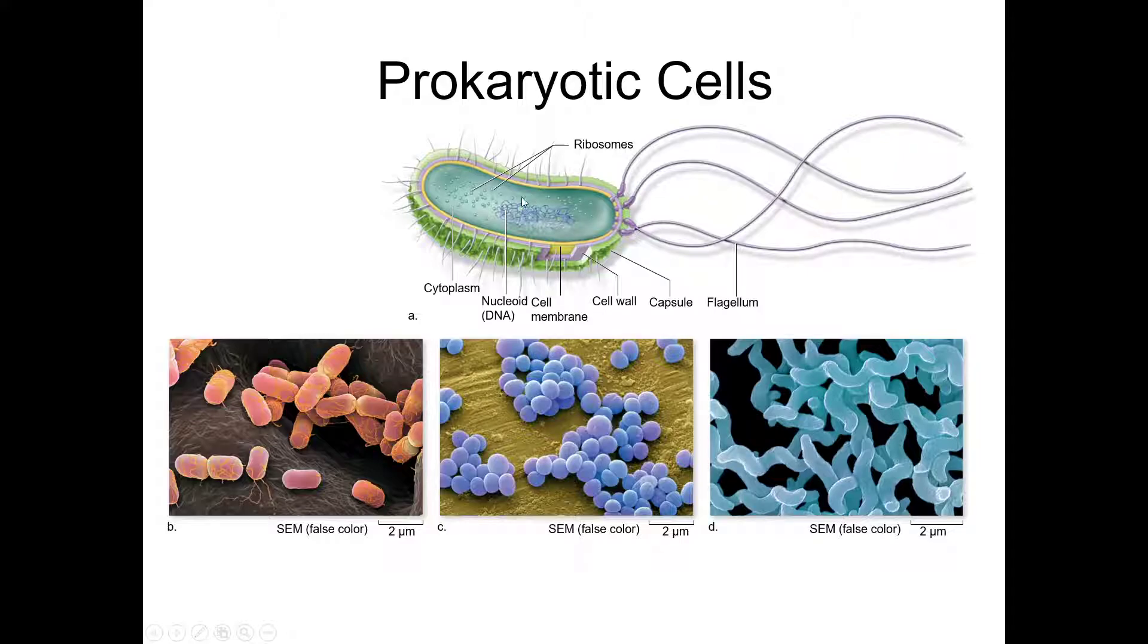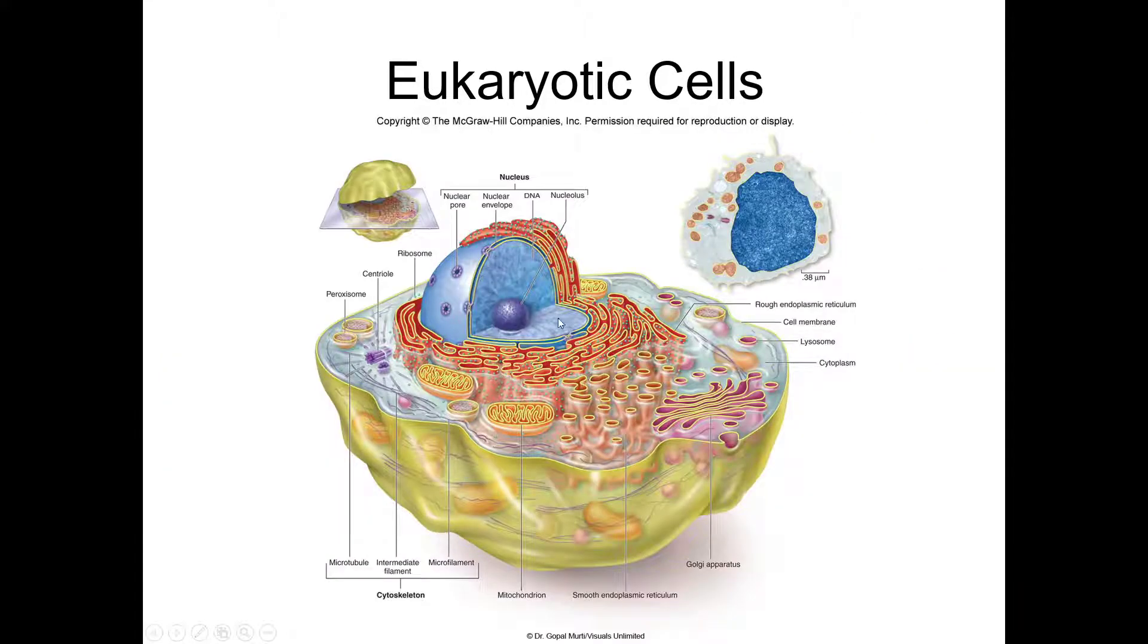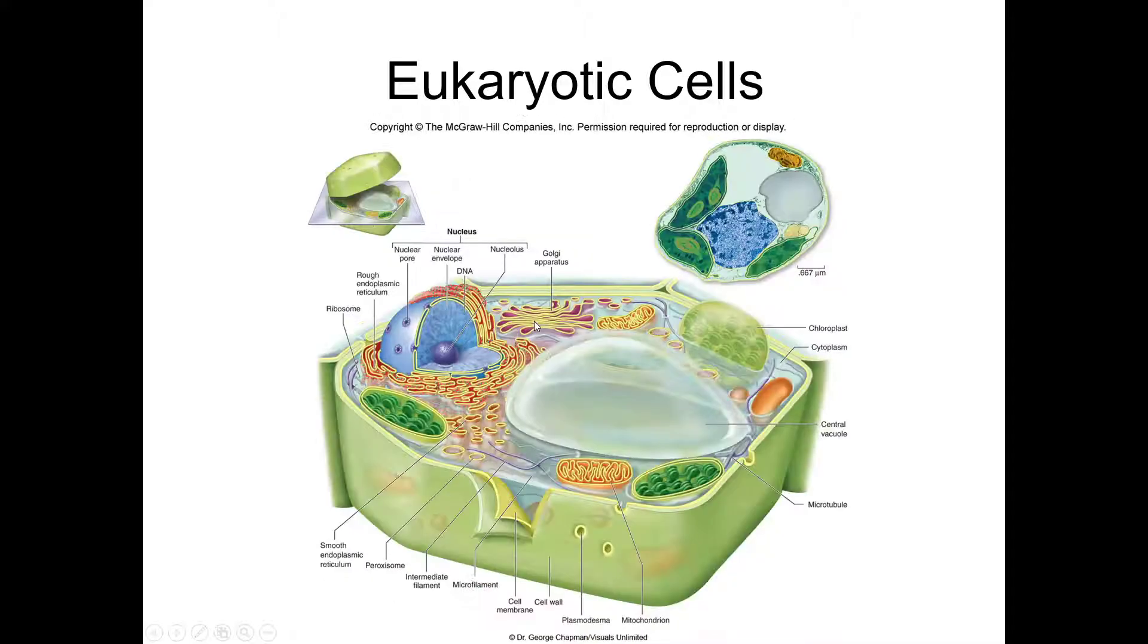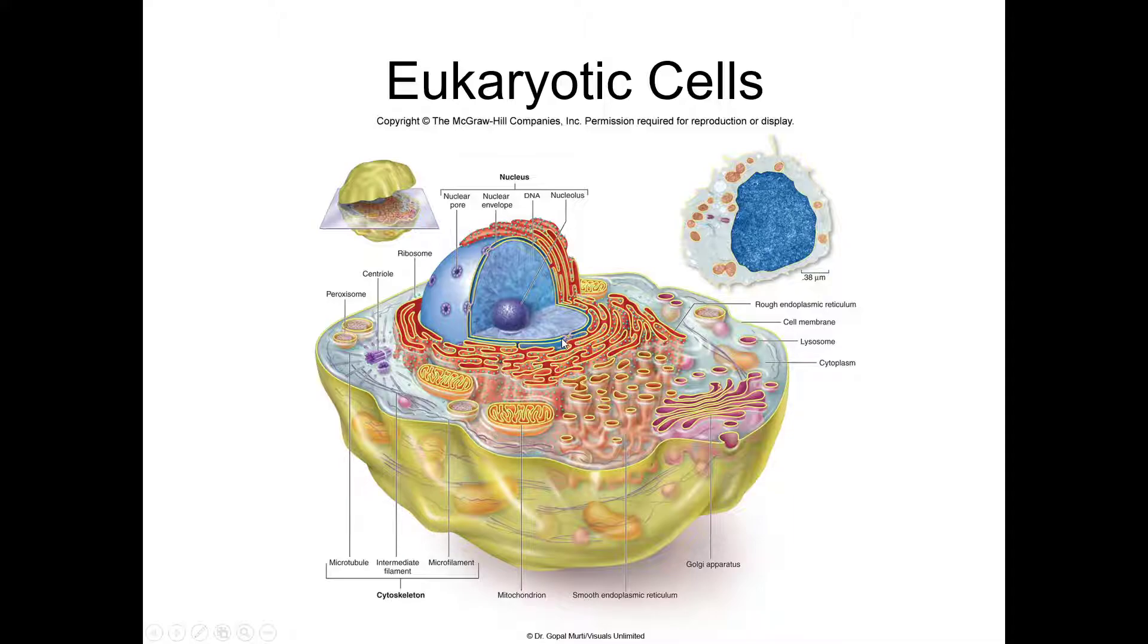Again coming back to this picture right here, there's a prokaryotic cell. It has this DNA and everything, but it doesn't have a nucleus like plant and animal cells have. That is one of the most obvious features of a eukaryotic cell.